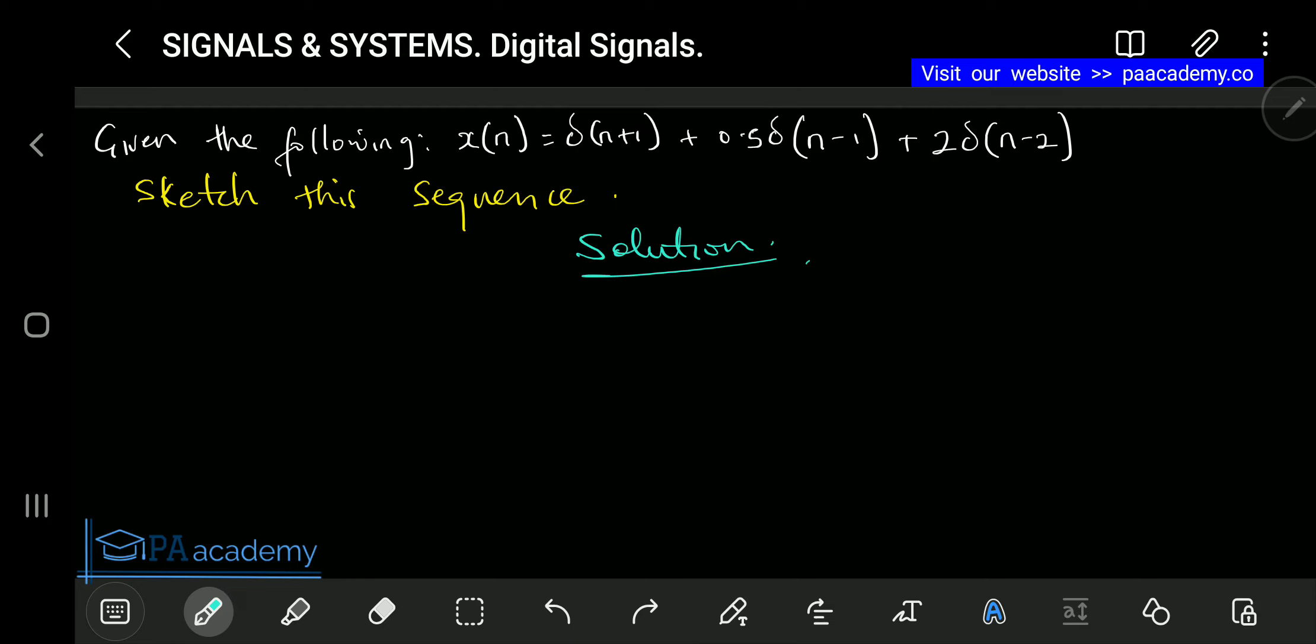What we are asked to do basically is to draw the sequence. So this is how we are going to go about it. Now these values that we are having here are the amplitude of the signal itself. Let's analyze other things that we have here. For this particular one, let's pick it one after the other. This is δ(n+1).